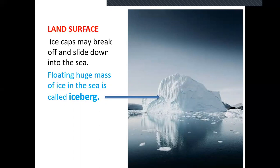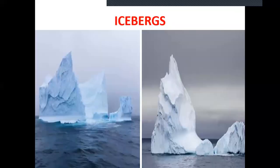Icebergs are very dangerous. Only a small portion is visible above water — whatever is visible, double that amount is hidden below the water. These icebergs are found in the Arctic Ocean.